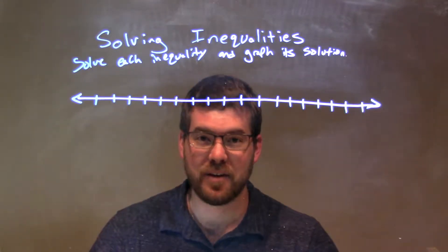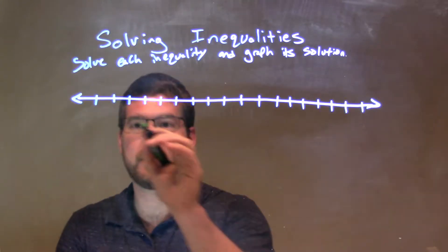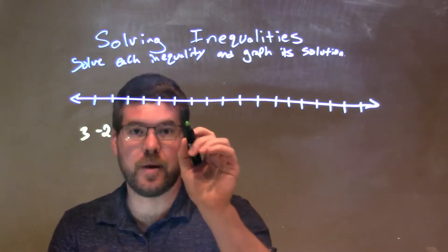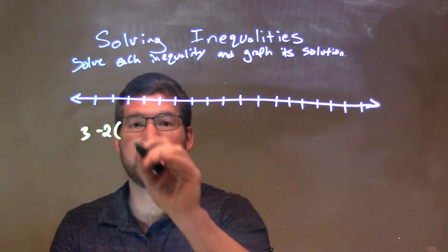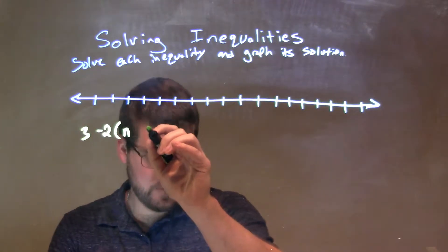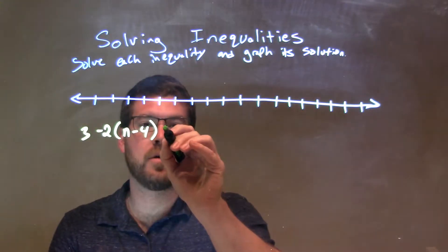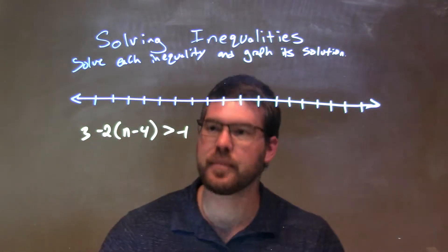So, if I'm given this inequality 3 minus... my cat is scratching against the stand, so I'm going to shift there for a second. 3 minus 2 times n minus 4 is greater than negative 1. Alright.